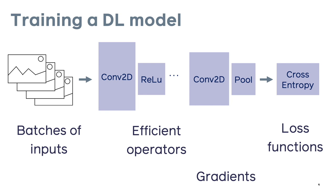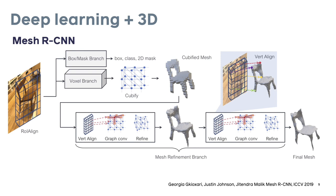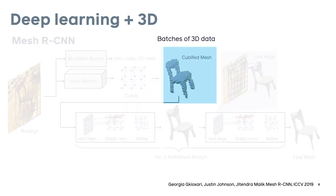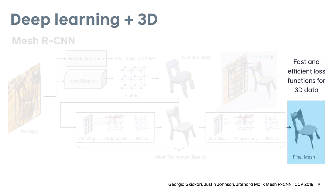Now let's think about what's needed for deep learning with 3D data — for example, the mesh RCNN architecture. We need to support batches of 3D data such as meshes, operations that work on 3D batched data in a fast and memory-efficient way, as well as being differentiable. We also need specific loss functions for predicted 3D data that are fast, memory-efficient, and differentiable.